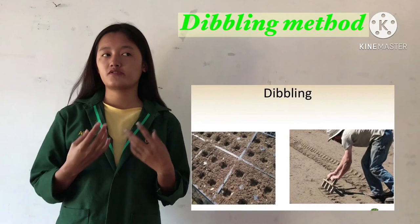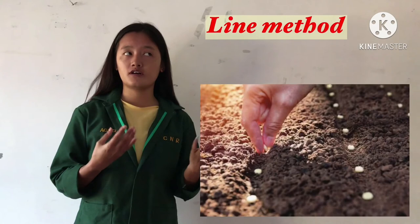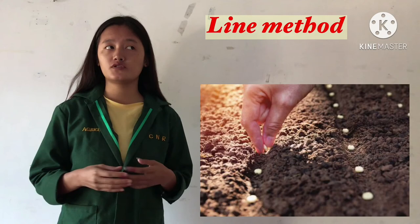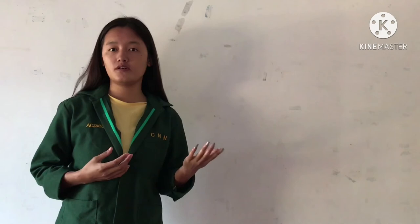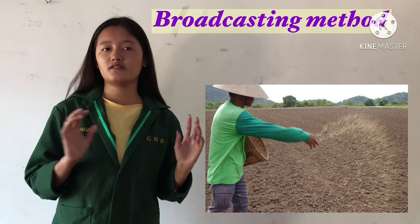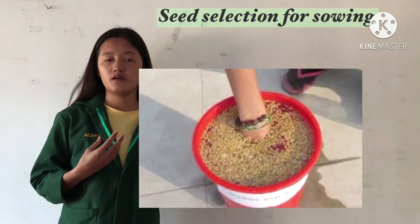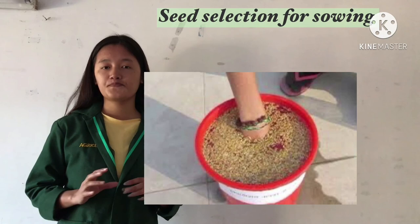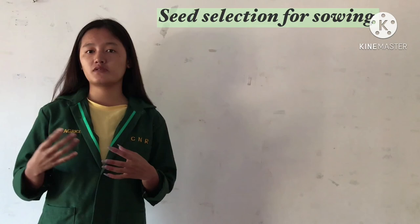In the dibbling method, we create a hole in the ground for a seed and then cover with soil. In the line sowing method, we sow seeds in lines in the main field, which ensures better germination and intercultural operations compared to the other two methods. In broadcasting, we just scatter seeds on the surface and cover with soil. Regarding seed preparation, we brought a bucket full of water, soaked the seeds in it and kept for some time, then took out the floated ones, drained the water, and used the remaining seeds for sowing. With this, we have come to an end in our video presentation. Thank you for watching.